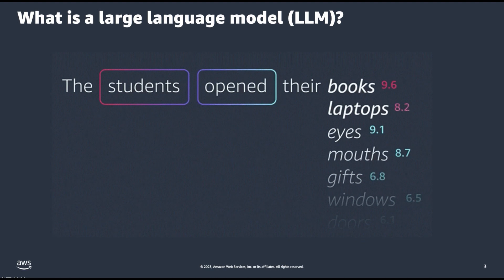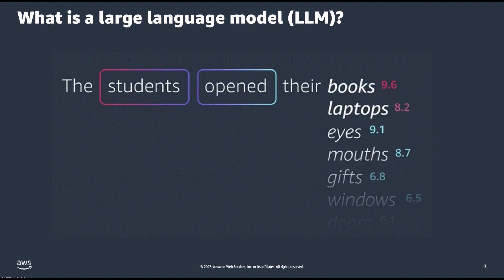It believes that there is a 9.6% chance that the correct next token is "books" and there is an 8.2% chance that the correct next token is "laptops." Once it has chosen the correct next token of "books," it may continue to iterate on the sequence. So now the input text is "the students opened their books" and it may choose the next token in the sequence to make the sentence "the students opened their books quickly." It will continue to iterate in order to generate more output until it is done.